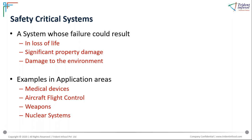Examples of safety-critical systems include medical devices, which when failed can definitely harm the person being monitored. Aircraft flight control systems have caused many real-life crashes resulting in loss of life. Weapons, intended for defense, if they fail can cause major damage. Nuclear systems—history has already shown the impact a nuclear system failure can cause to the environment.